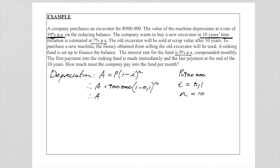Substituting into the formula: A = 900,000 × (1 − 0.1)^10. If you put this into your calculator you get 313,810 rand and 60 cents. So the value of this excavator after 10 years will be 313,810.60 rand — significantly less than the original purchase price of 900,000 rand.